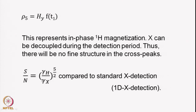Now, since here we excited the proton and also detected the proton, the signal-to-noise will be proportional to (γH/γX)^(5/2) compared to standard X detection, where you apply a pulse on carbon and detect carbon. This is quite a substantial enhancement in sensitivity. For example, if this were proton and nitrogen, the factor is 10^(5/2). 10^5 is 100,000, and the square root of that is almost 330. So you gain a signal-to-noise of 330 in the case of proton-nitrogen — that is a substantial saving in experimental time — and sensitivity enhancement is therefore a very big advantage in this HSQC experiment.